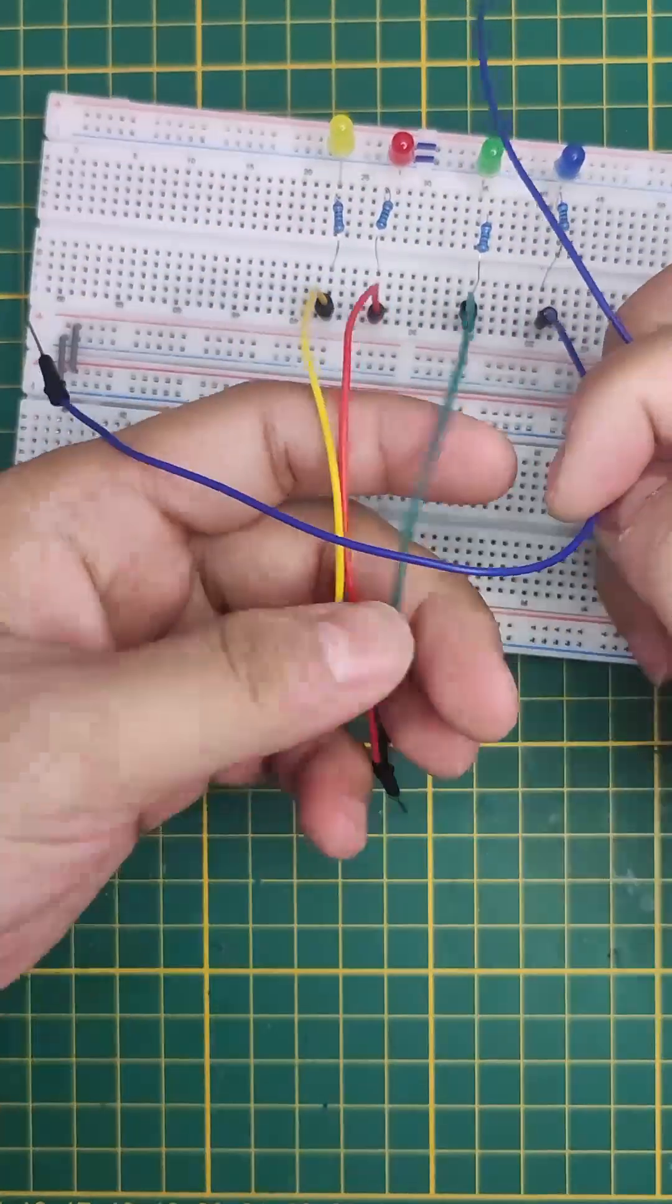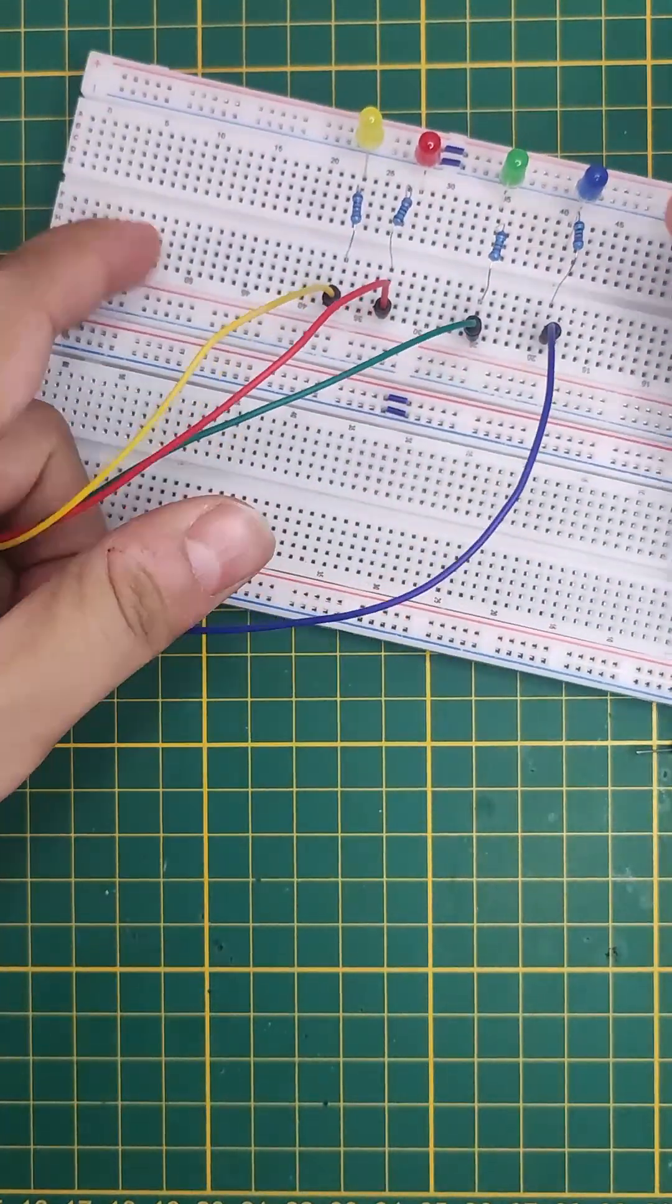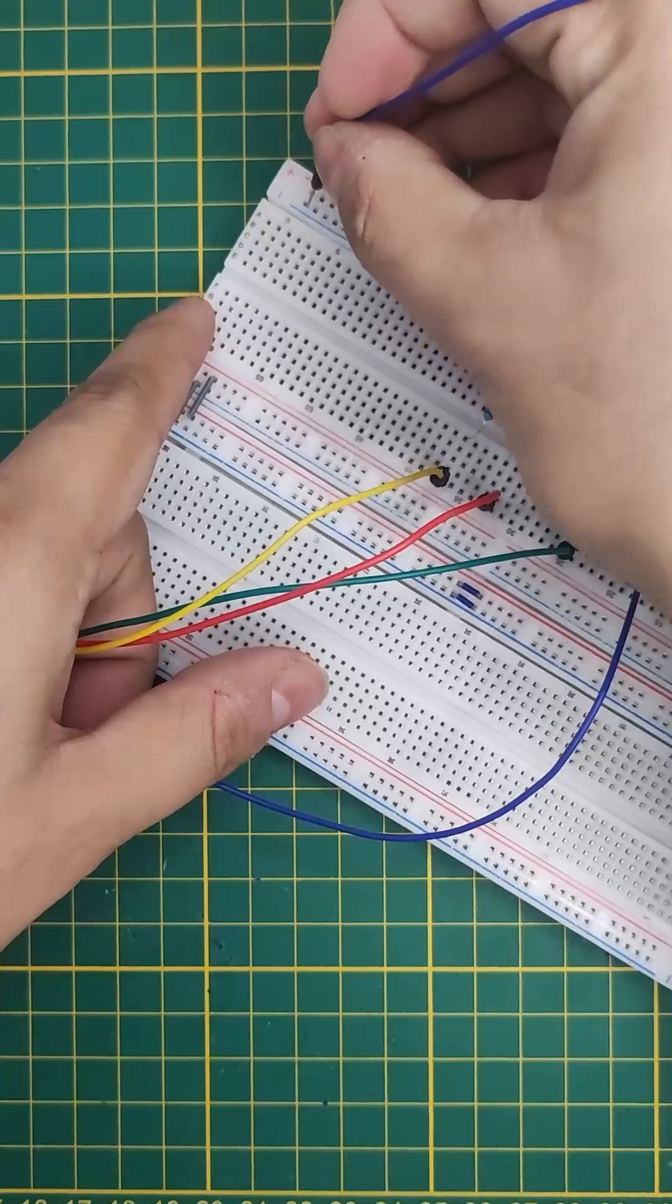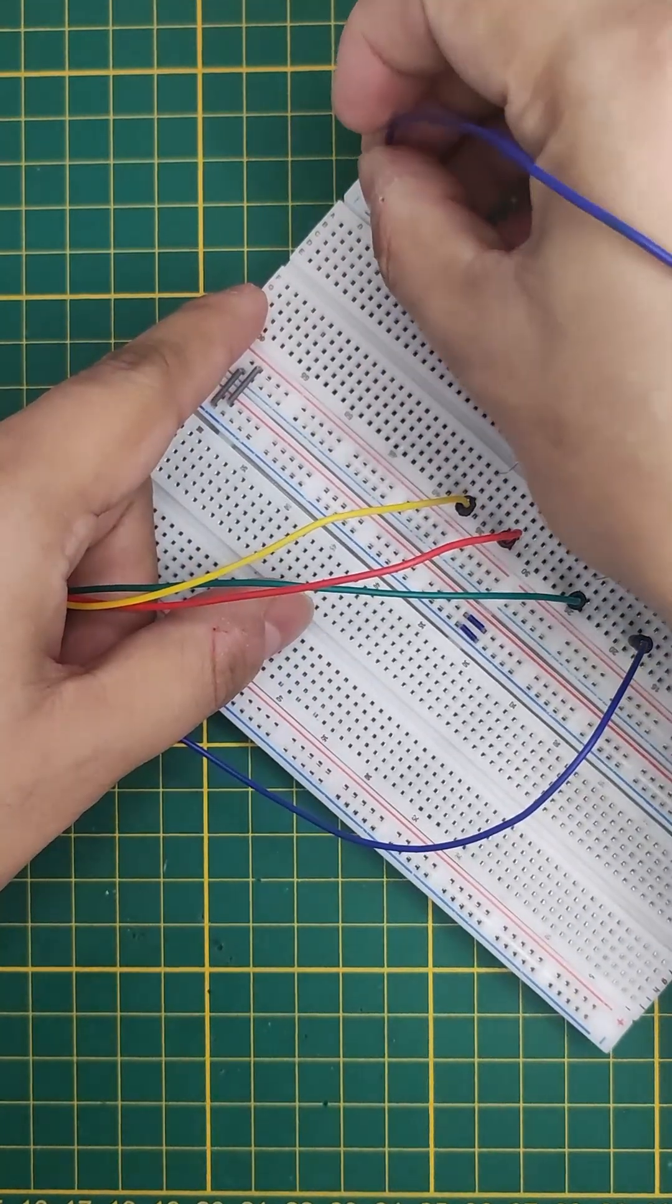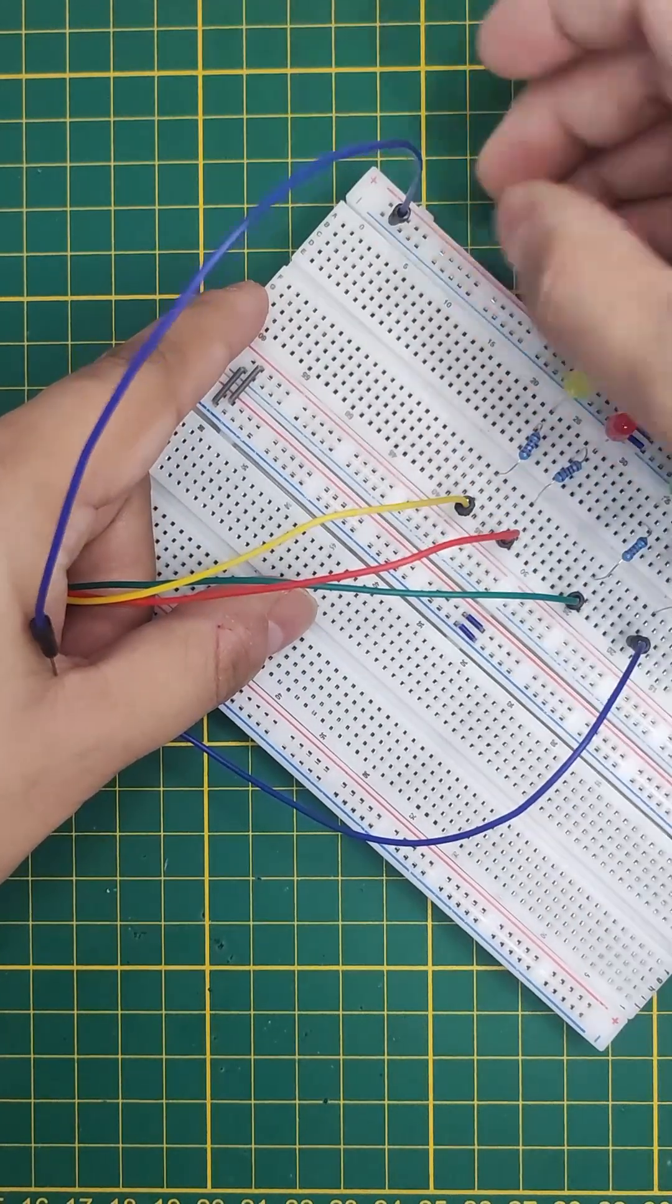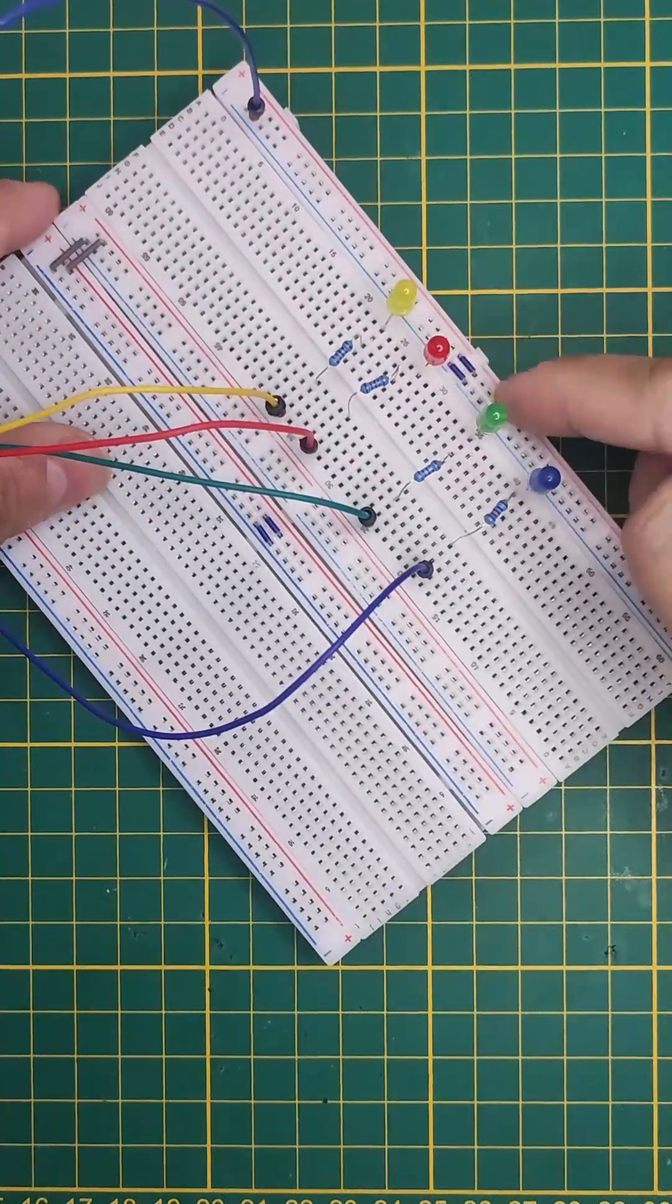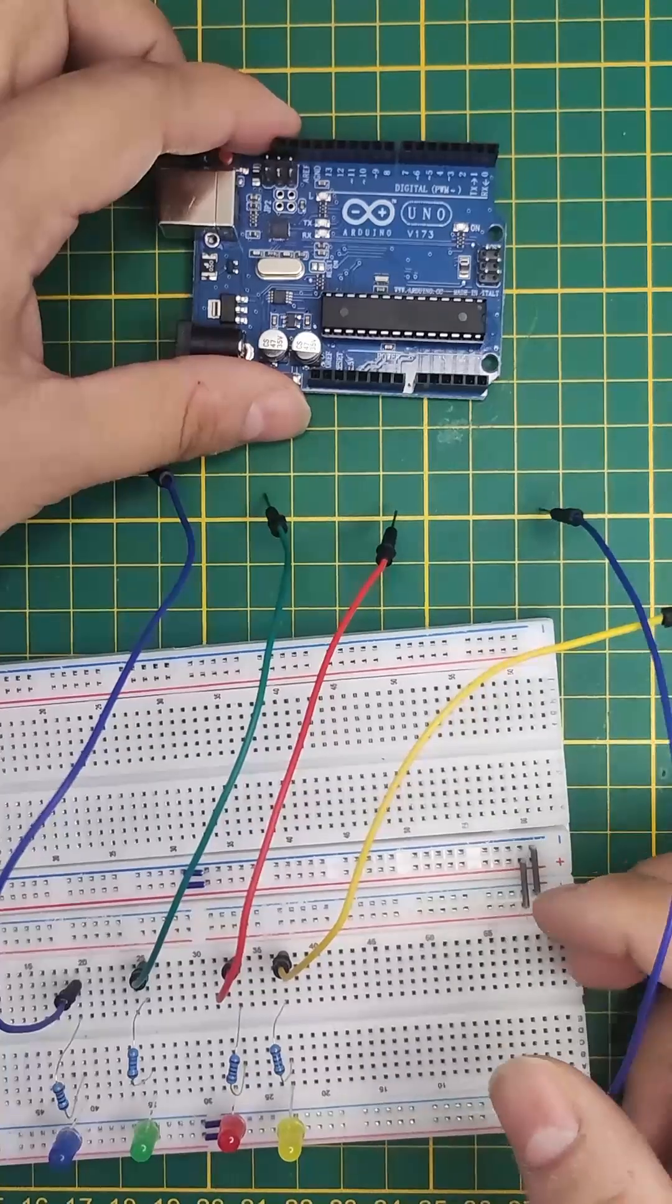I've connected all the LEDs with the respective jumper wires. The other thing we need to connect here is the negative or ground for the breadboard, because this is shared in these LEDs.